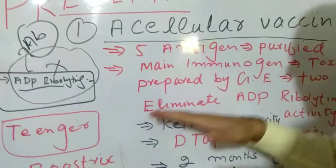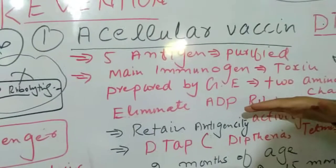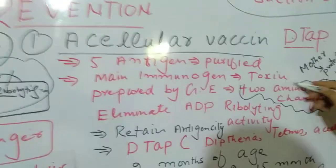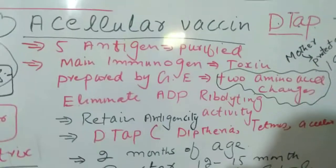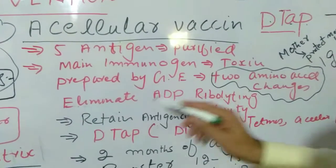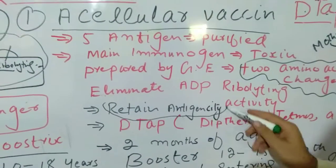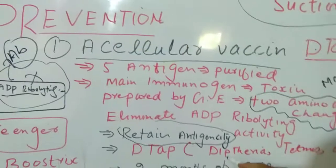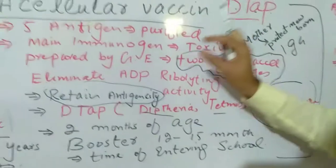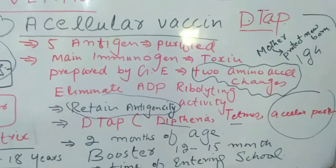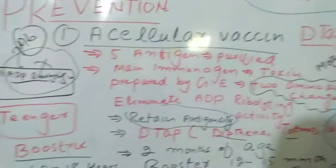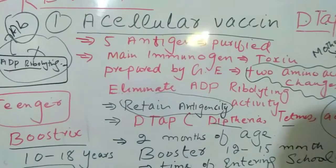This vaccine is made by genetic engineering by introducing two amino acid changes to the toxin. The toxin retains its antigenicity but loses its pathogenicity. It is called acellular because only the protein part — the toxin — is used, and not a live attenuated organism.